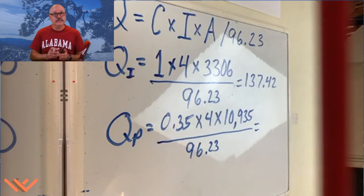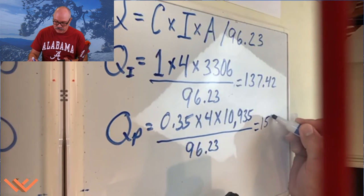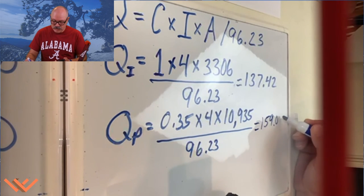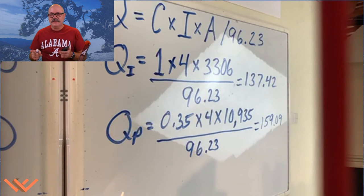And that's going to equal to, let's take a look here. So 0.35 times four equals 1.4, and then multiply that by 10,935. So I have 15,309 divided by 96.23. And that's going to equal 159.087. Since I'm rounding up to the nearest hundreds, it's going to be 159.09 because the number to the right of that eight is greater than five. So I rounded up to the hundreds.